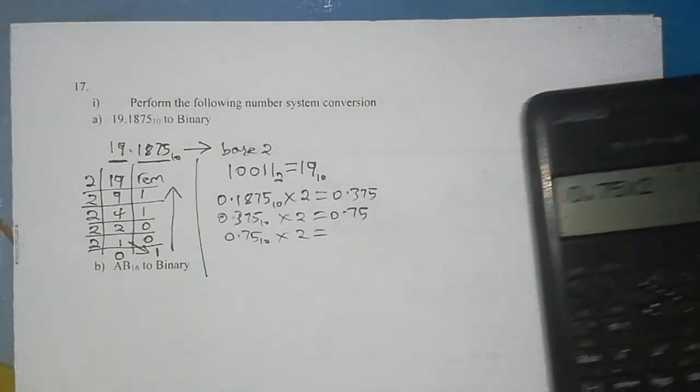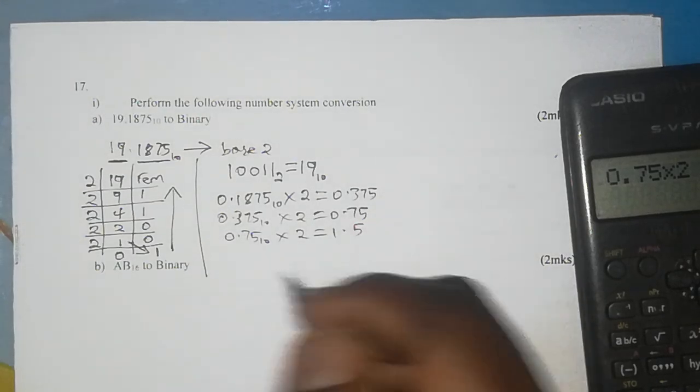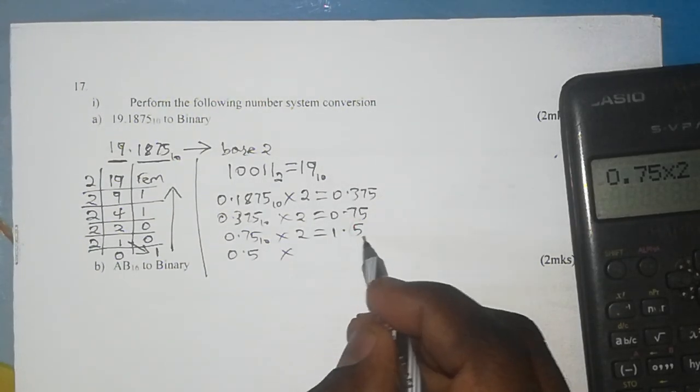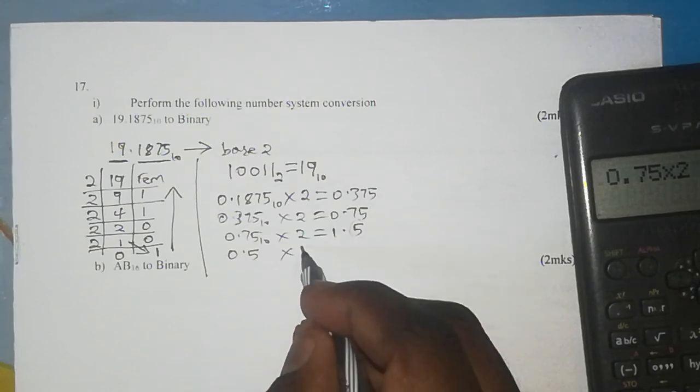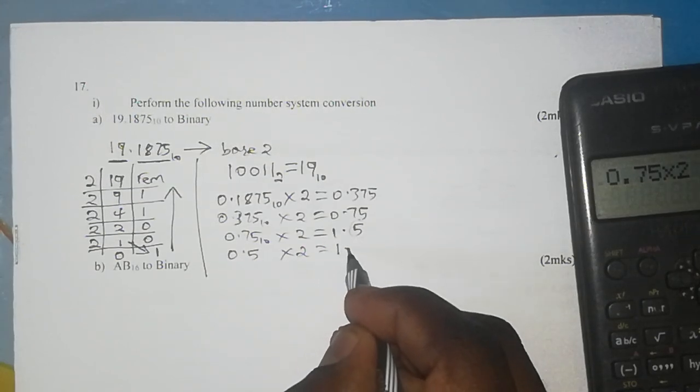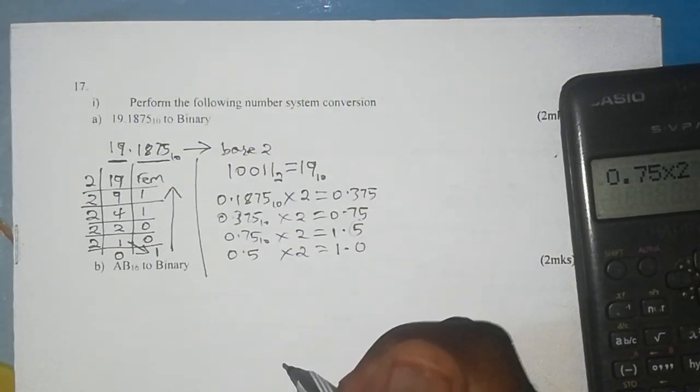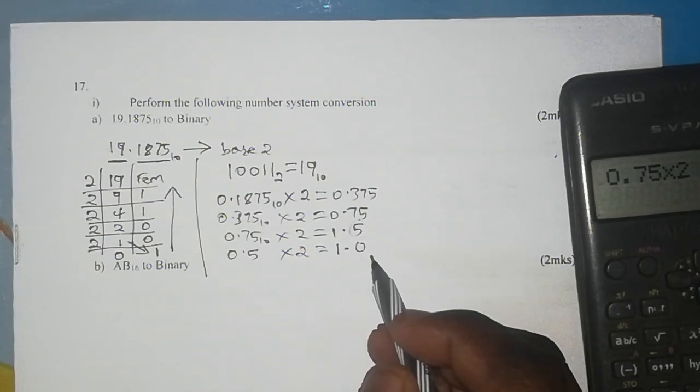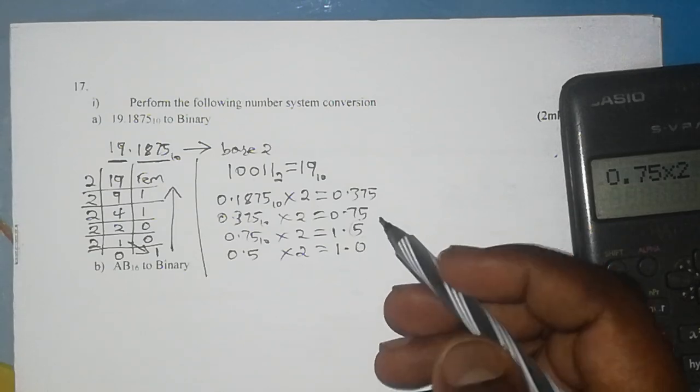...which gives us 1.5. We continue: 0.5, we are taking the fraction part only, remember, times 2 gives us 1.0. So the fraction part has become 0, it has disappeared. So this is where we stop.